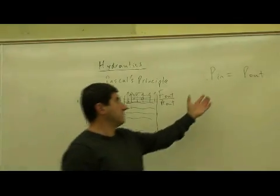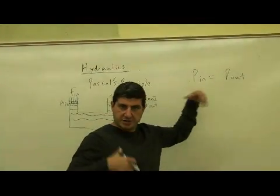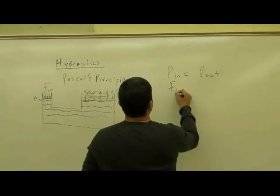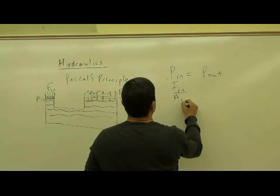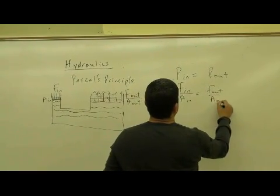So the pressure in will equal pressure out, according to Pascal's principle. Now in real life, there is some loss of pressure due to frictional losses, but in theory, pressure in equals pressure out. Which means F in over A in equals F out over A out.